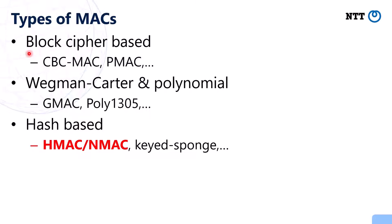In cryptology, Message Authentication Codes, or MACs, is one of the most basic and important primitives. There exist several types of practical MACs. For example, there exist block cipher-based MACs such as CBC-MAC and PMAC. There also exists the combination of Wegman-Carter construction and polynomial hashes, such as GMAC and POLY1305. Another construction is hash-based MACs, such as HMAC and NMAC, and the Sponge construction. Our focus is HMAC and NMAC.